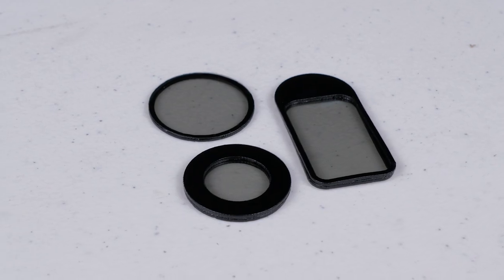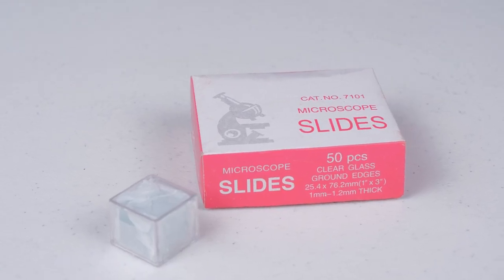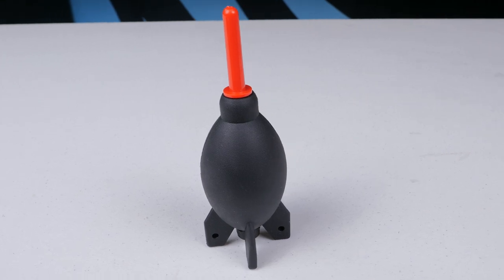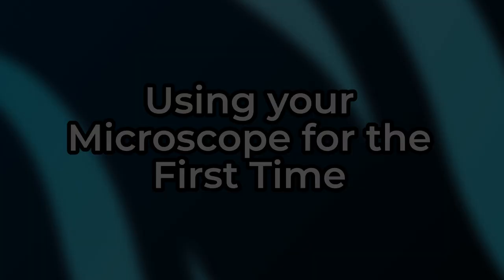Also included are a polarized light filter set, blank slides and cover slips, prepared sample slides, a rocket dust blower, and a lens tissue booklet. Using your microscope for the first time.